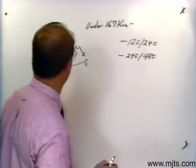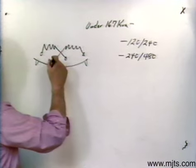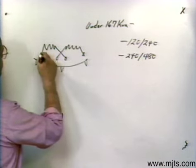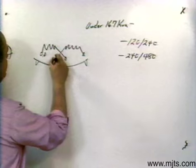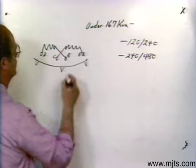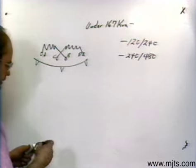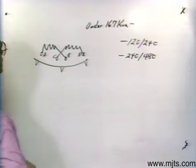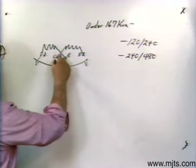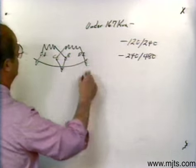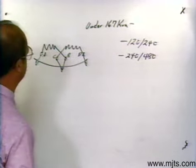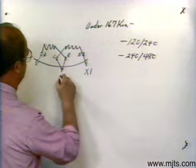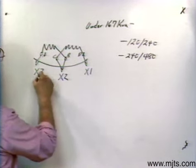The internal connections on transformers under 167 kVA are going to be identified by A, C, B, and D. Normally when it comes to you it's going to be connected series — in other words, A comes out C, and B and D come out. If it's an additive transformer, remember your polarity: that means this terminal is X1, this is X2, and this is X3.